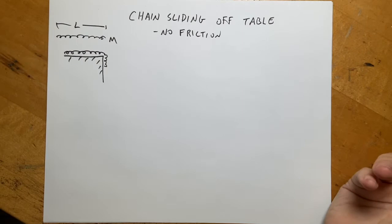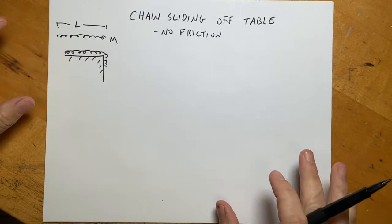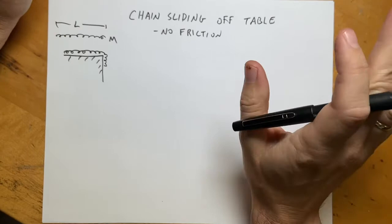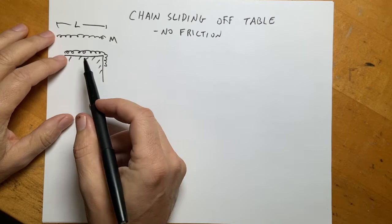Suppose you have a chain laying on a frictionless table with a little piece hanging over the edge, and you let go. You can imagine the chain would eventually fall off the table. The question is: what's the motion going to be like? I'm going to do a simplified version where the chain moves horizontally on the table and the hanging piece moves straight down.